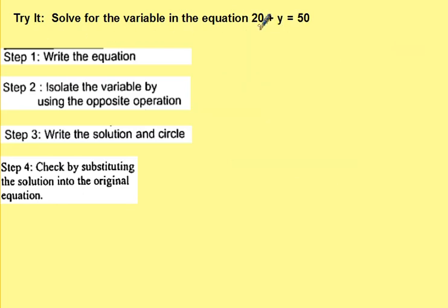Solve for the variable in the equation 20 plus y equals 50. The variable is y. It's being added by 20. The opposite is to subtract 20 from both sides.